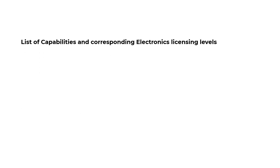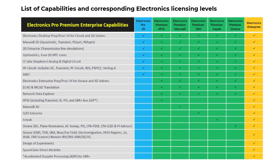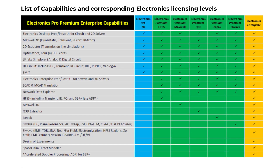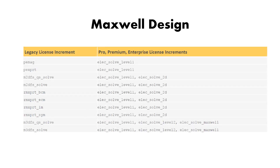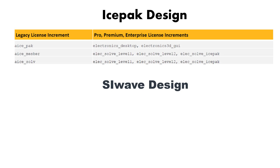Here is a list of capabilities and which level of the electronics licensing supplies them. We are also seeing maps of the legacy license to the new PPE license model — this will be the licenses for HFSS Design, Maxwell Design, Icepack Design, and Sciwave Design.